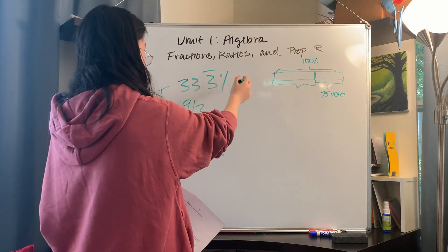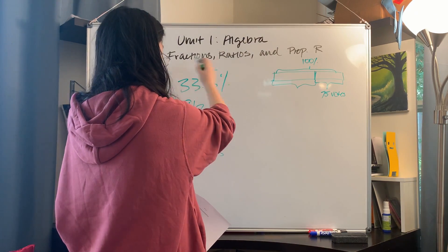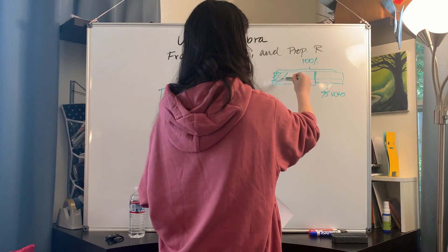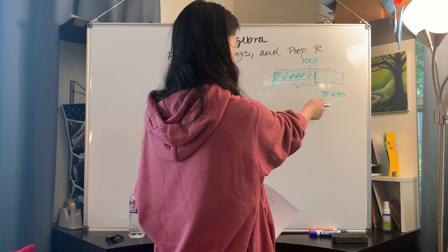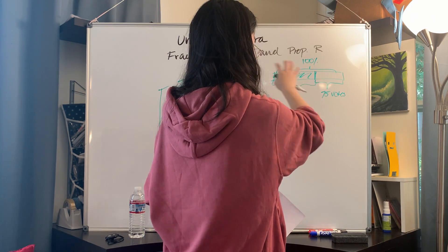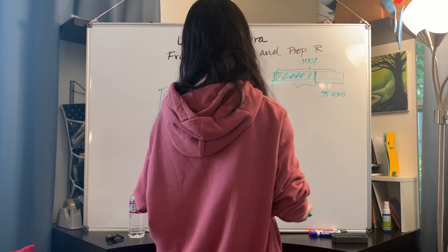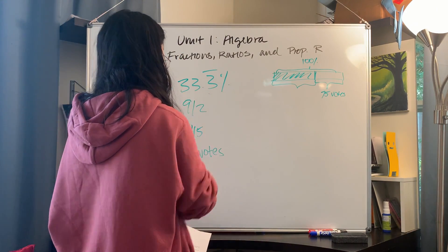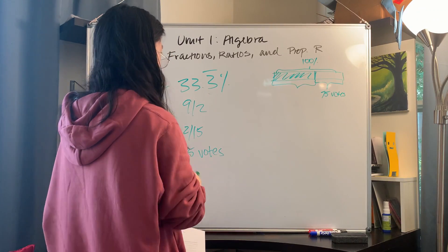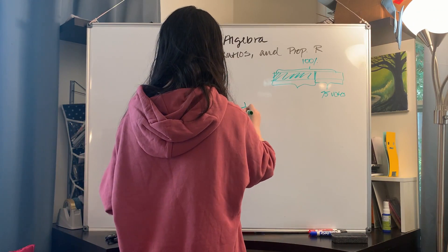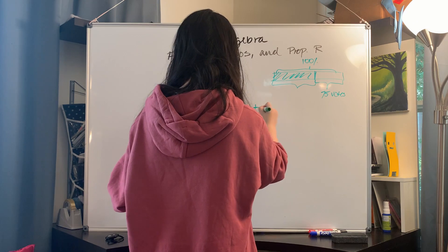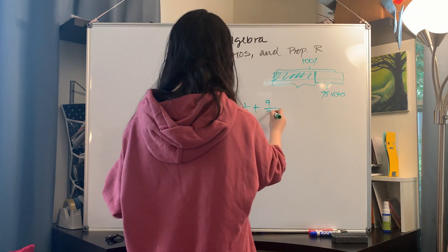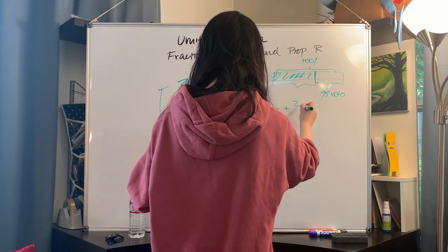So what we want to do is figure out how much of the total this part is, so we can figure out how much of the total 75 votes is, and then figure out what the total — 100% — is. First we should add these three together.